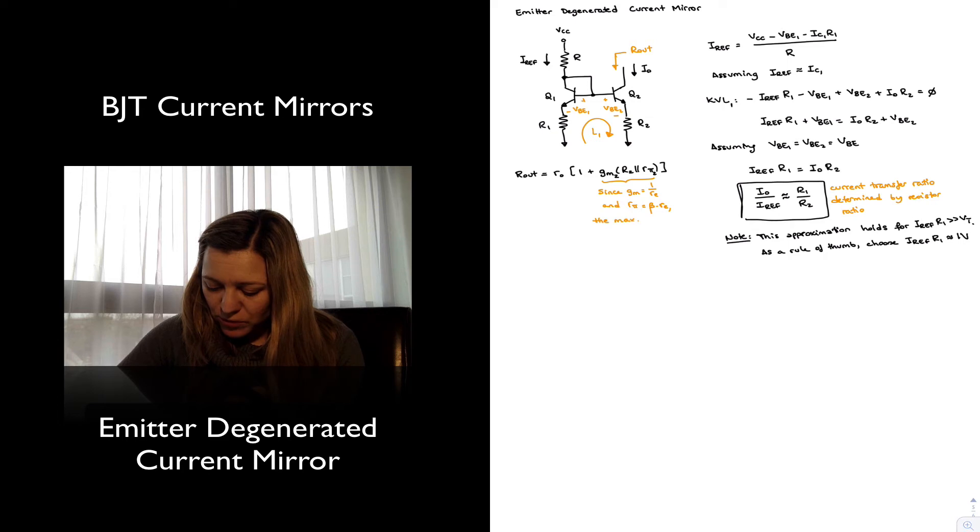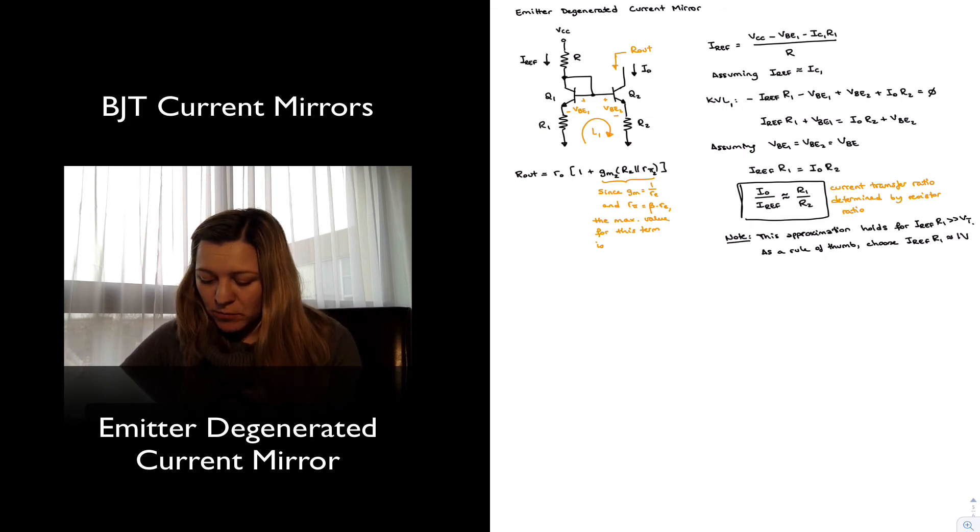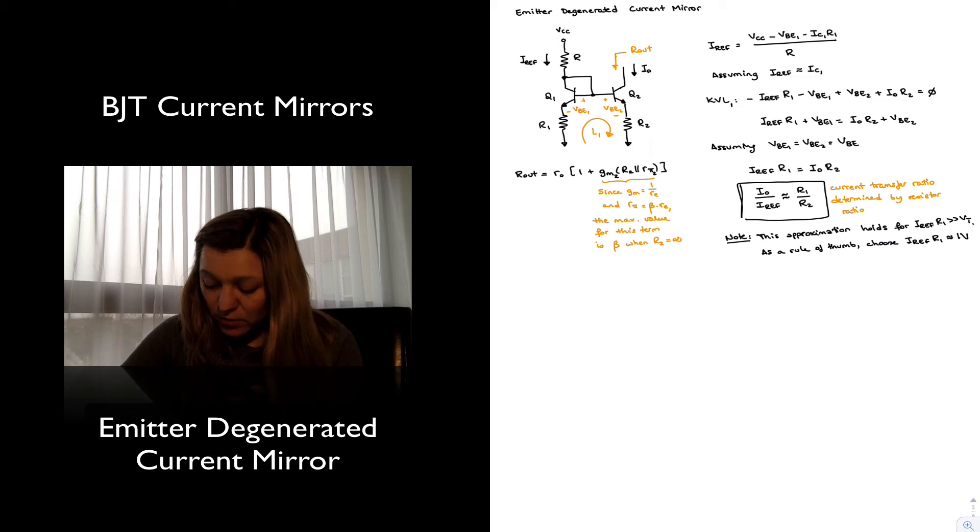The maximum value for this term will be when R2 is very large, we'll approximate it as an open circuit or infinity. When that is the case, the parallel combination of R2 and Rpi2 simply becomes Rpi, and gm times Rpi, since gm is 1 over little r_E and Rpi is beta times r_E, is equal to beta. So it's beta when R2 is equal to infinity, or an open circuit.